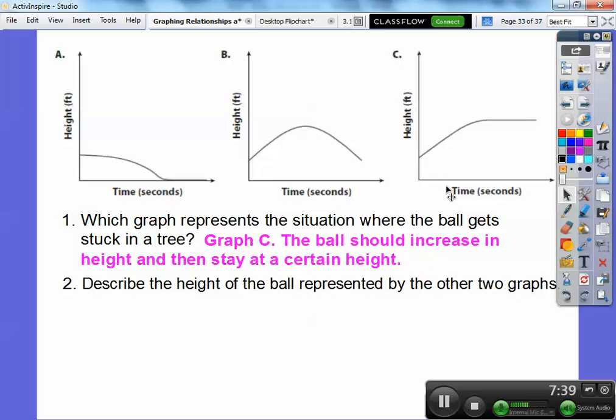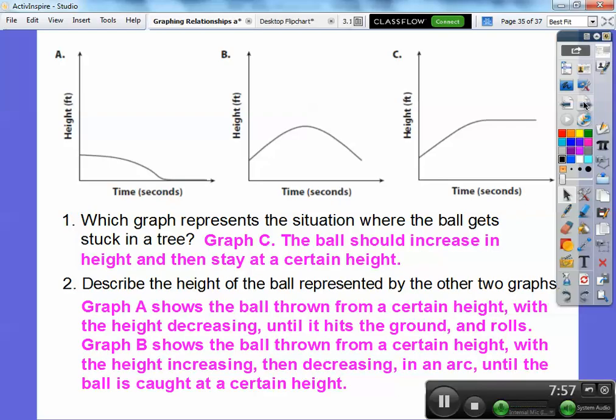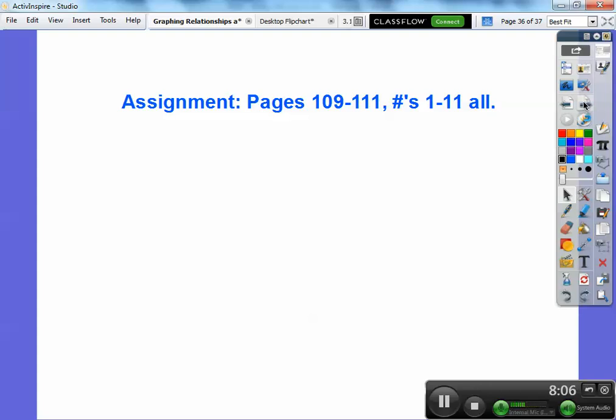So describe the ball that represented by the other two graphs. So this one's the one where the ball dropped in front of him and it rolled and rolled and rolled. This one's the one where he threw it up at an arc and he caught it. His buddy caught it right there. So graph A shows the ball thrown from a certain height with the height decreasing until it hits the ground and keeps rolling. Graph B shows the ball thrown from a certain height with the height increasing and increasing then decreasing in an arc until it is caught by his partner at a certain height.